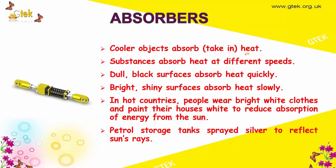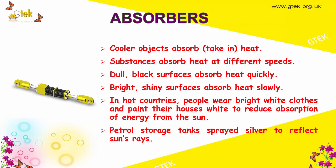Cooler objects absorb — that is, they take in heat. Absorbers are things which absorb something. Substances absorb heat at different speeds. Dull black surfaces absorb heat quickly, whereas bright shiny surfaces absorb heat slowly.